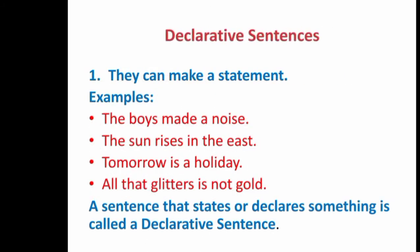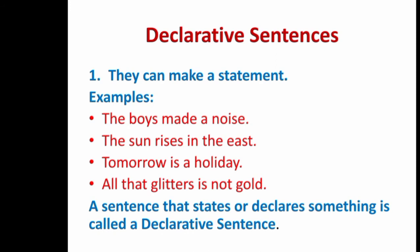Declarative sentences make a statement. They give us a proper statement or declaration — something which can be a universal truth. For example: 'The boys made a noise.' 'The sun rises in the east.' 'Tomorrow is a holiday.' 'All that glitters is not gold.' These are all giving us statements, so we call them declarative sentences.